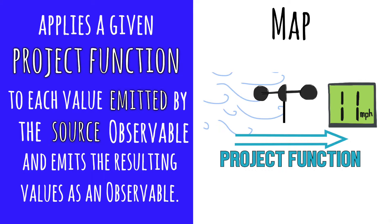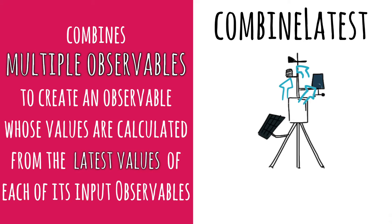I'm going to interpret each of these changes as a certain type of operator straight out of the RxJS documentation. Starting with the instruments — if the instruments were an operator, they would be a map, because a map applies a given project function to each value emitted by the source observable and emits the resulting values as an observable. The weather station would be the combineLatest operator, because it combines multiple observables to create an observable whose values are calculated from the latest values of each of its input observables.